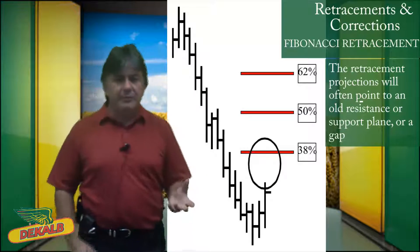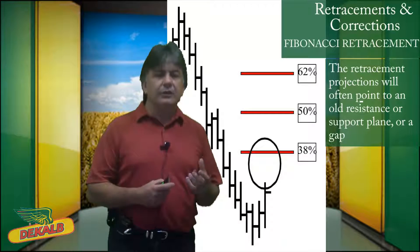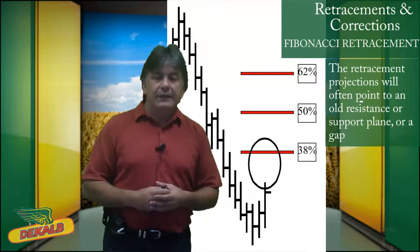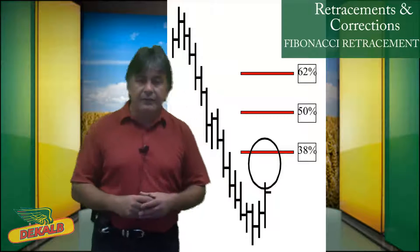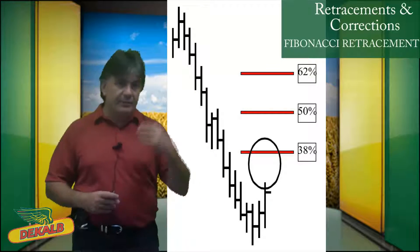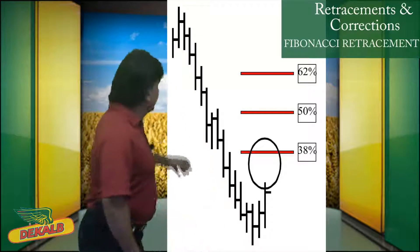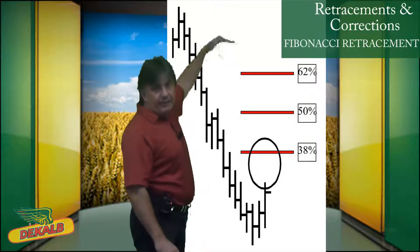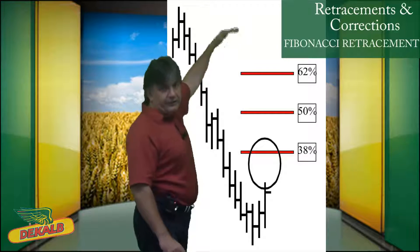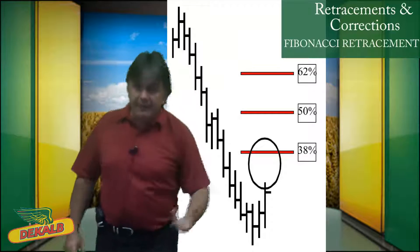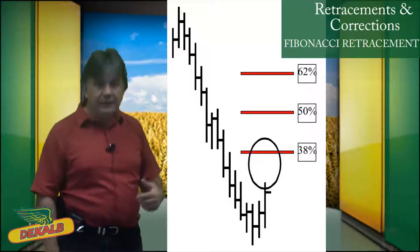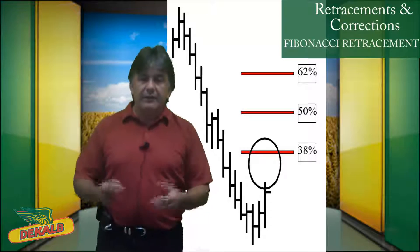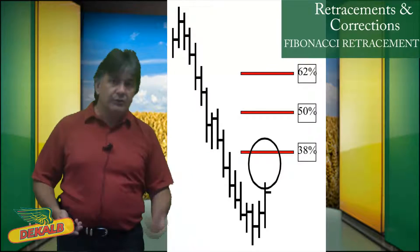The retracement projections will often point to an old resistance, support, or gap. It basically allows producers to maybe enter a position. Maybe you've missed the top, so the market comes down and starts to come back up — you can maybe enter a position at that 38, 50, or 62. Maybe take some profits on the position you had, or perhaps identify the strike price that should be used for a put or a call.